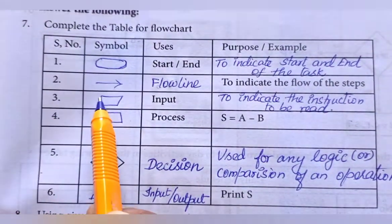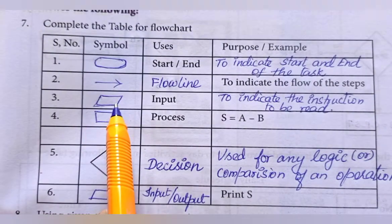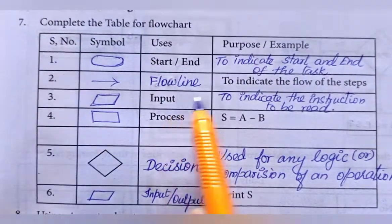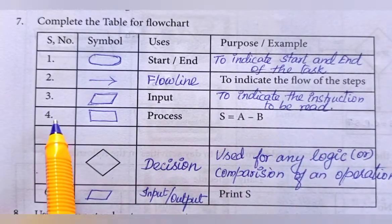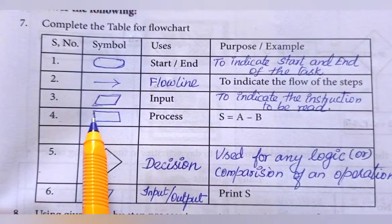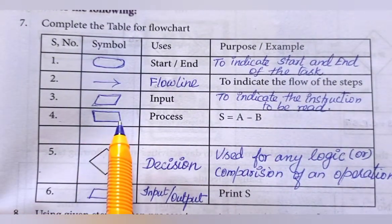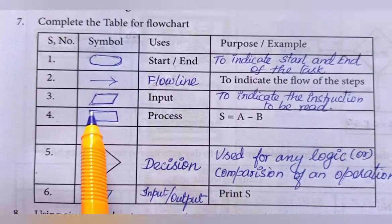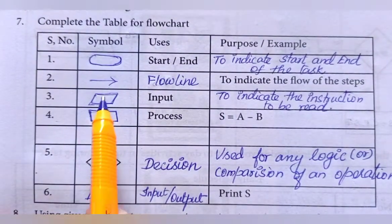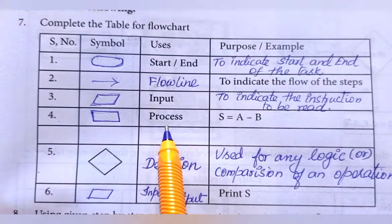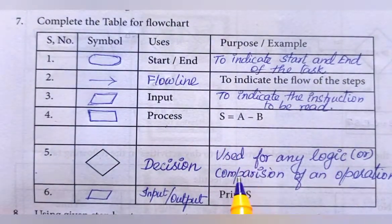Third one, it indicates input. To indicate the instruction to be read. Then, fourth one is, in the parallelogram, we say, it is a process. So, S equal to A minus B.